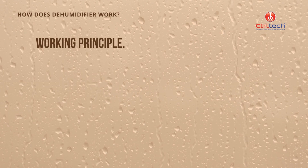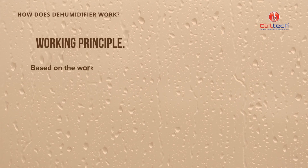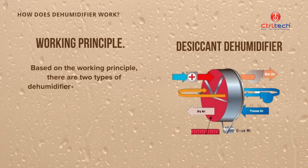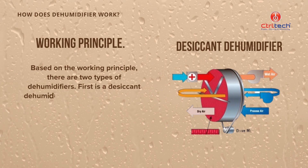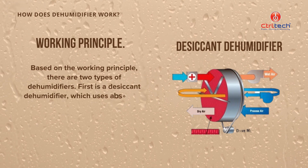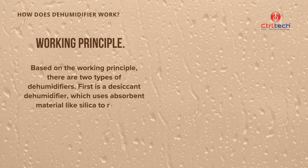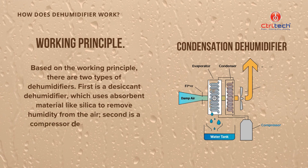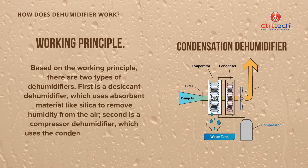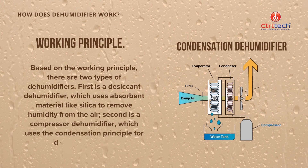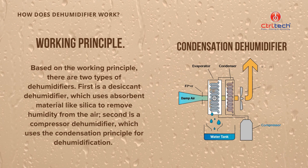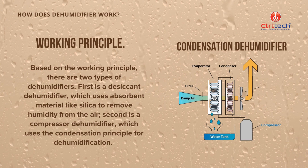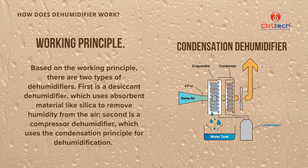Many applications need a climate with very low humidity, and in such places dehumidifiers are used. Based on the working principle, there are mainly two types of dehumidifier. The first is called a desiccant dehumidifier, which uses absorbent material like silica to remove humidity from the air. The second, and most commonly used, is the compressor dehumidifier, which uses the condensation method for dehumidification. In this session we are going to discuss the working of the condensation dehumidifier only.